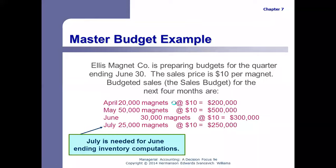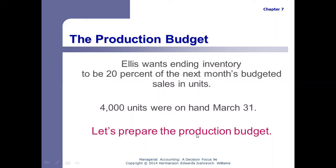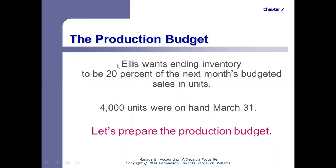Now that we know how many we're going to sell, we need the production budget — the next step is figuring out how many do we need to make. This is a company that makes its own magnets. If we were buying the inventory from someone, this would be called the purchases budget or inventory purchases budget. The same concept applies: how many do we have to either make or buy based on how many we budgeted to sell? This company wants ending inventory to be 20% of next month's budgeted sales.